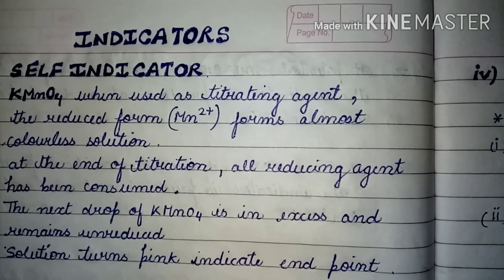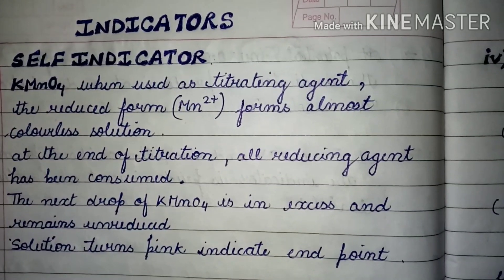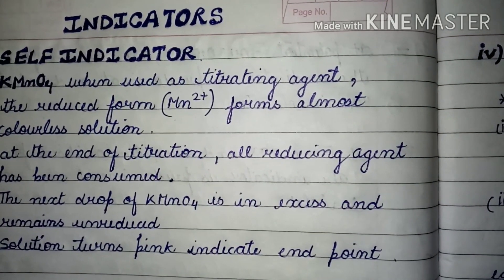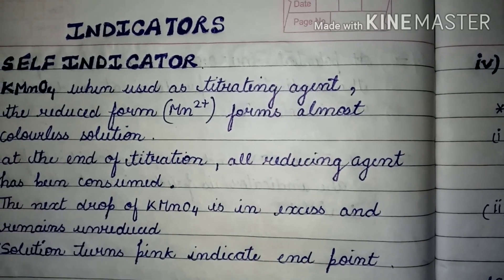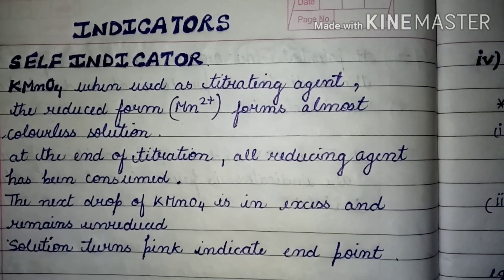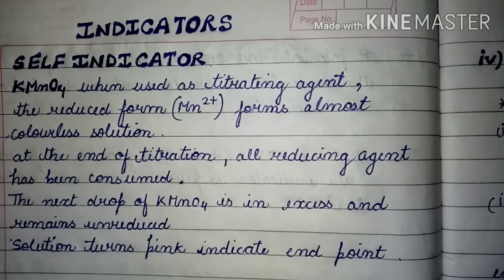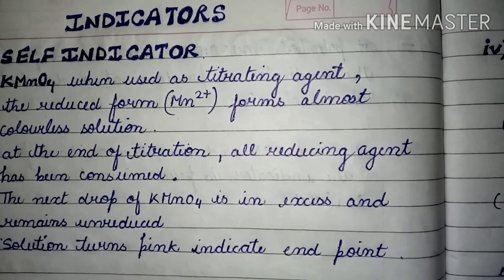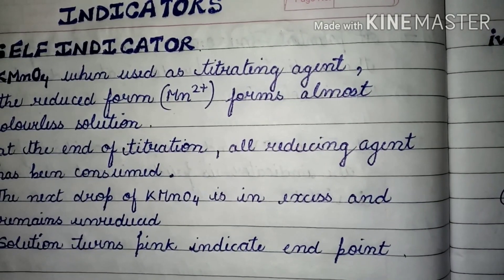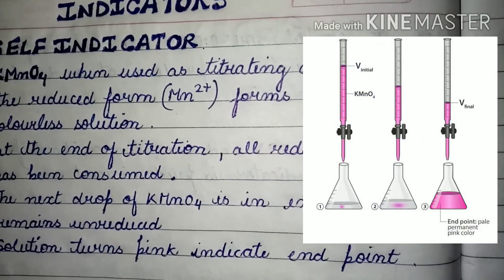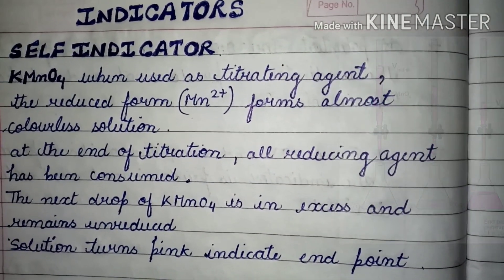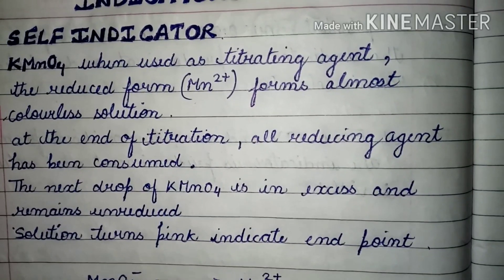The basic principle is that KMnO4 has a pink color solution, whereas in its reduced form it shows an almost colorless solution. At the end of the titration, when all the reducing agent is consumed, the next excess drop of KMnO4 remains unreduced. KMnO4 is an oxidizing agent — it gets reduced by the reducing agent — and when no reducing agent is left, the excess KMnO4 gives a pink color, indicating the endpoint.